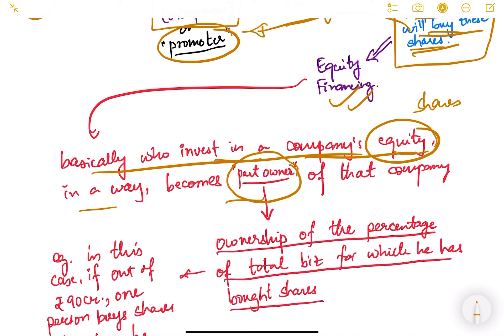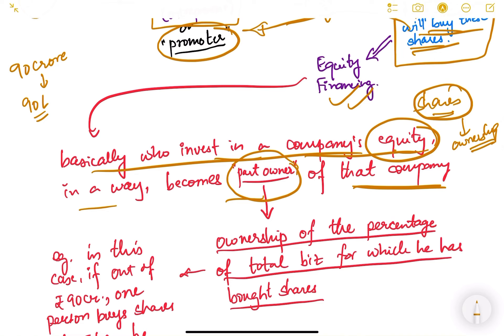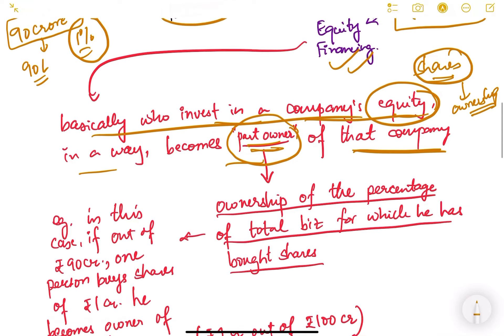Whoever invests in a company's equity — whoever buys these shares — in a way becomes a part owner of that company. It is called a 'share' because it represents a share in the ownership. So if someone buys shares worth 90 lakh rupees out of the 90 crore total shares issued, 90 lakh is 1% of 90 crore, so that person becomes an owner of approximately 1% of that company.